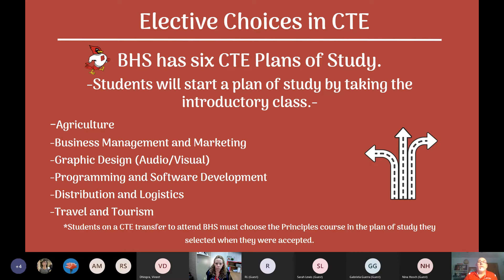Now let's look at elective choices in the career and technology department. Bel Air has six plans of study. Students can start a plan of study by taking the introductory course in agriculture, business management and marketing, graphic design with audio-visual emphasis, programming and software development, distribution and logistics, or travel and tourism. CTE options are available as part of endorsements, and students have a chance to earn certifications in some of the business areas.